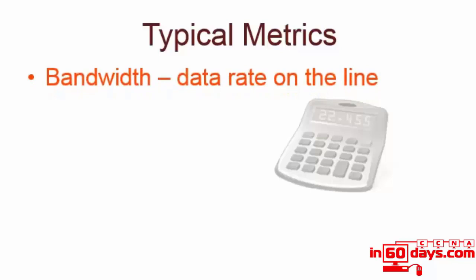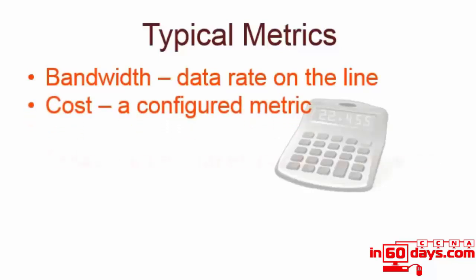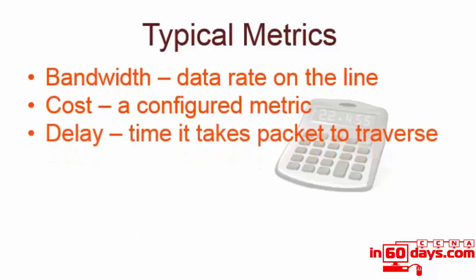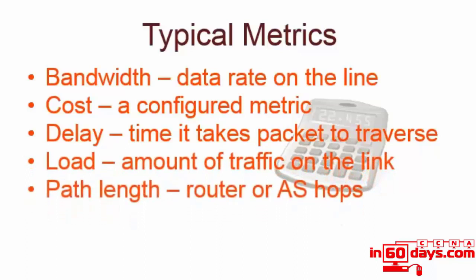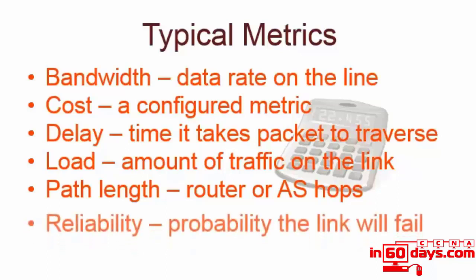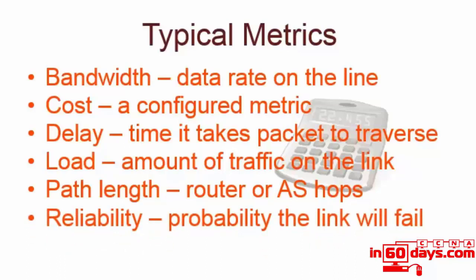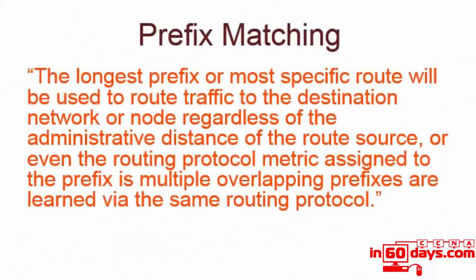Typical metrics you will come across when configuring protocols for CCNA: bandwidth is the data rate on the line; cost is a configured metric so it can vary; delay is the time it takes a packet to traverse; load is the amount of traffic on the link; path length is the router hops; an administrative system is a group of routers under the control of one administrative domain; and reliability - if a link is flapping, going up and down in rapid succession due to some sort of fault, a cost penalty can be applied. Prefix matching - the longest prefix or most specific route would be used to route traffic.